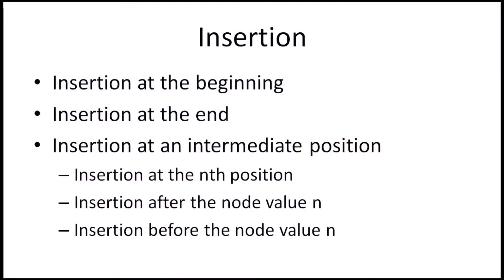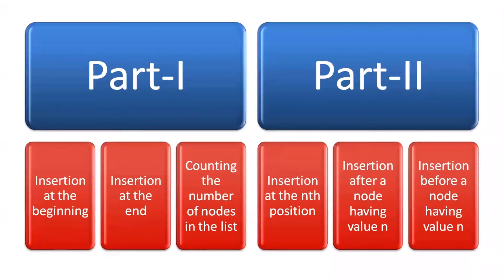Insertion of nodes in a linked list can be done in five different ways. The user may choose to insert a node at the beginning, at the end, or at any intermediate position. Since discussing all methods in one tutorial would be too long, we are splitting it into two parts. Part one covers insertion at the beginning, insertion at the end, and counting the total number of nodes, while part two deals with insertion at the nth position, insertion after a node having value n, and insertion before a node having value n.